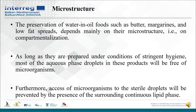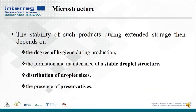The preservation of water-in-oil foods such as butter, margarines, and low-fat spreads depends mainly on their microstructures. As long as they are prepared under conditions of stringent hygiene, most of the aqueous phase droplets in these products will be free of microorganisms. Furthermore, access of microorganisms to the sterile droplets will be prevented by the presence of the surrounding continuous lipid phase. The stability of such products during extended storage depends on the degree of hygiene during production, the formation and maintenance of stable droplet structures, distribution of droplet sizes, and the presence of preservatives.